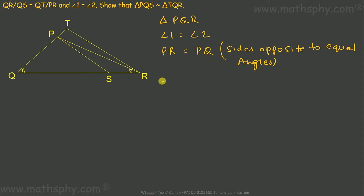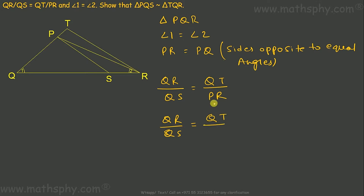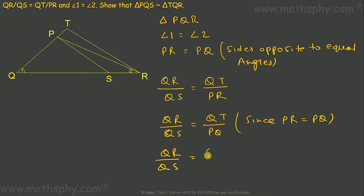Now it says QR over QS is equal to QT over PR. Since PR is equal to PQ, I can write PQ in place of PR. So QR over QS equals QT over QP.